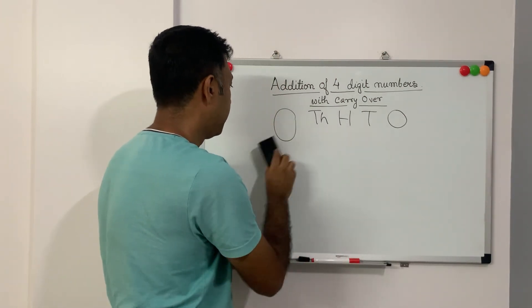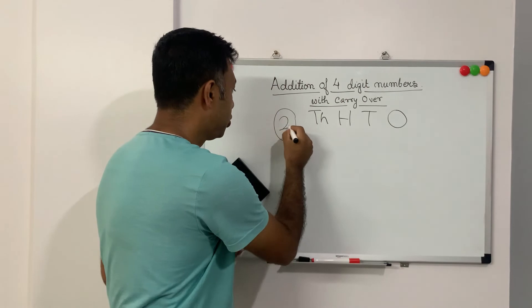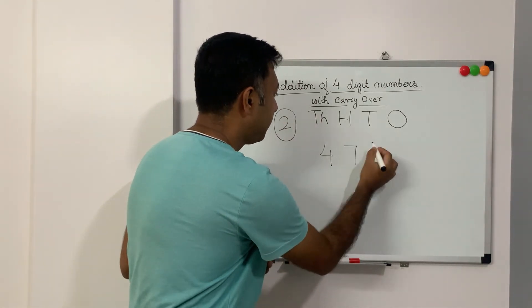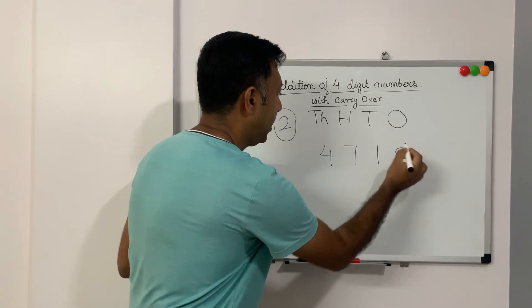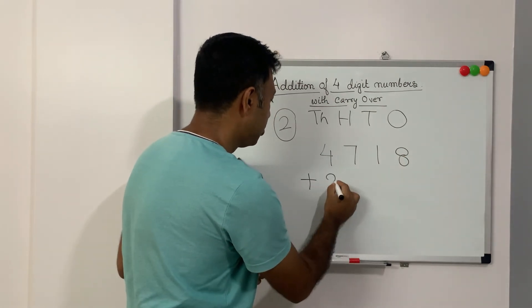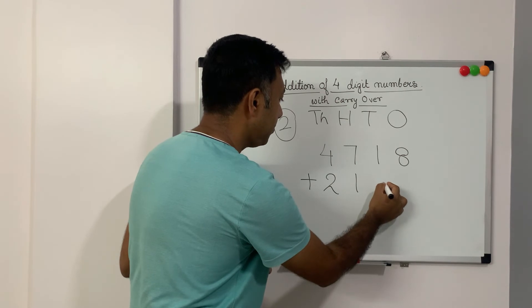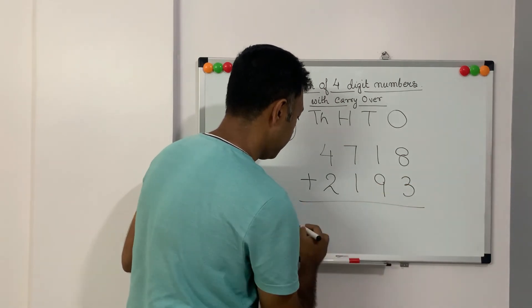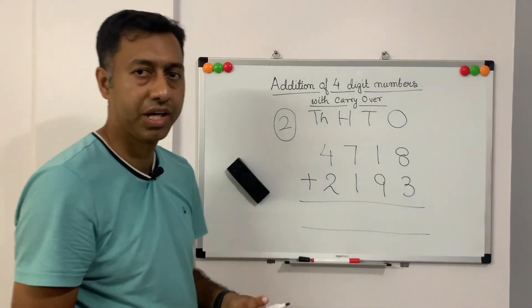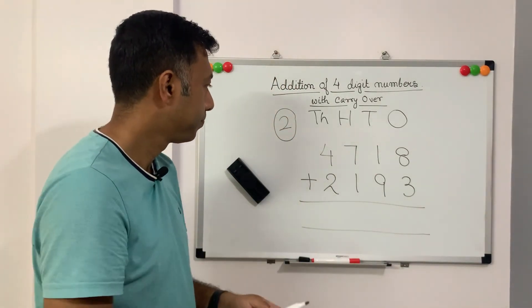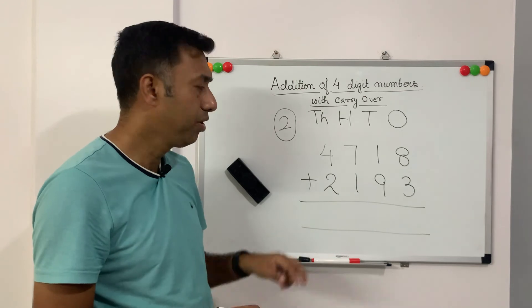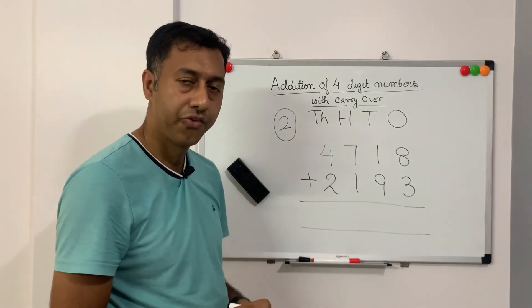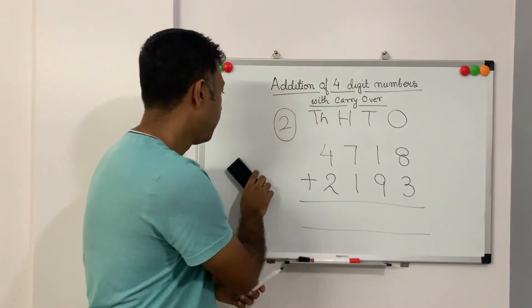Now let's take another homework. This will be our homework number 2. It is 4718 plus 2193. This is your second problem. Okay. Quickly note it down. 4718 plus 2193. Now one more.